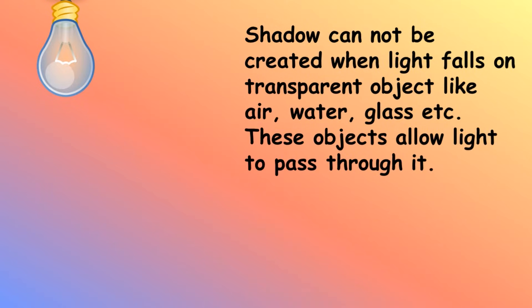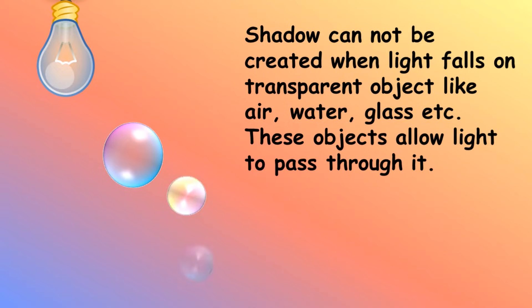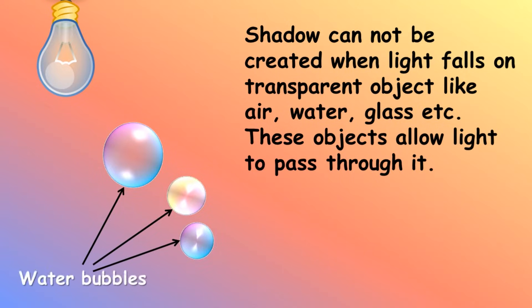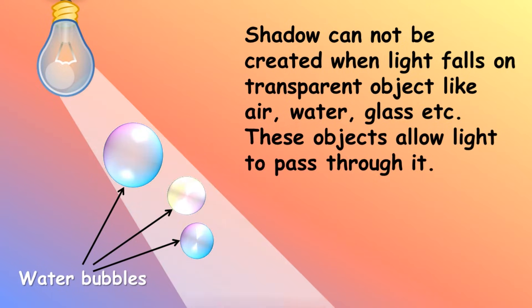A shadow cannot be created when light falls on a transparent object like air, water, glass, etc. These objects allow light to pass through them. Here we can see that light can easily transfer through water bubbles, as water bubbles are transparent.